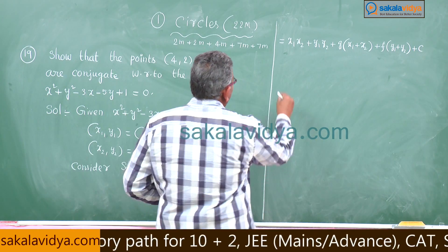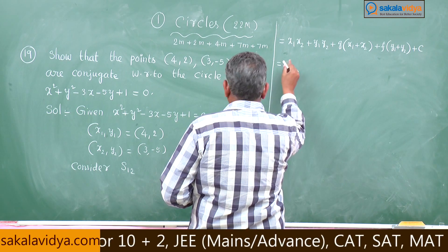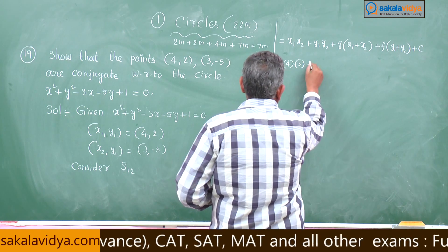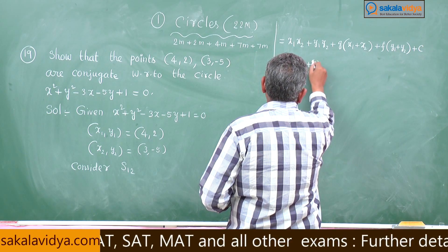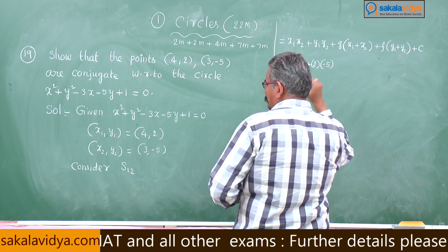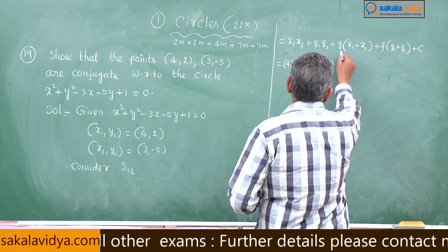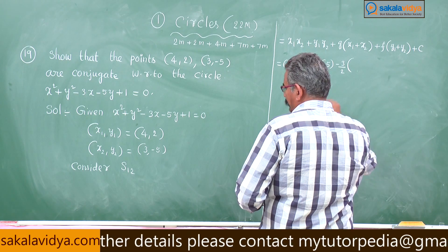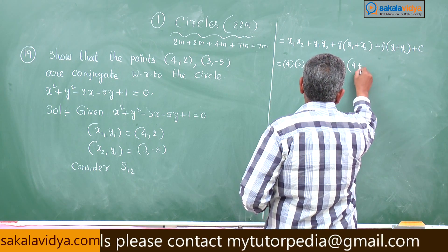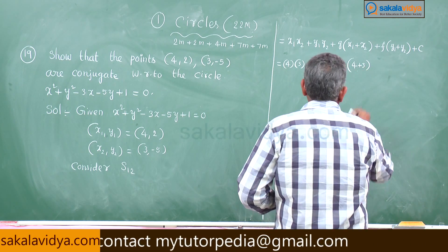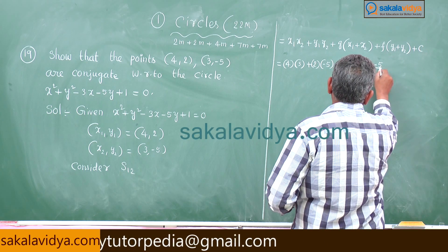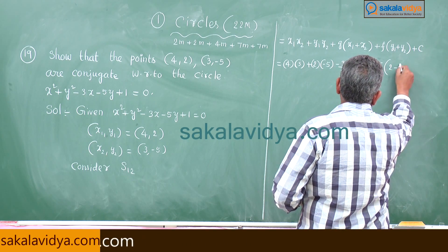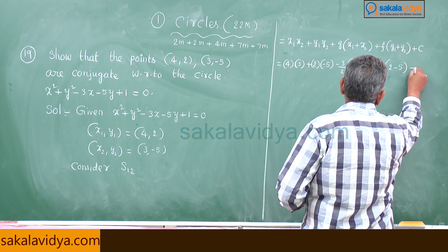Let us substitute: 4 × 3 plus 2 × (-5), where g = -3/2, so g(x₁ + x₂) = (-3/2)(4 + 3), and f = -5/2, so f(y₁ + y₂) = (-5/2)(2 + (-5)), and constant c = 1.